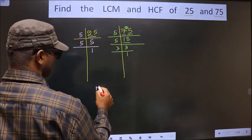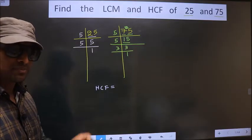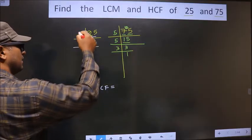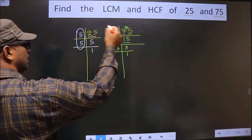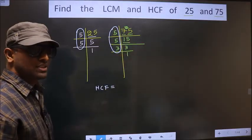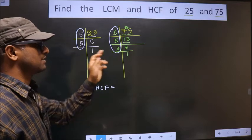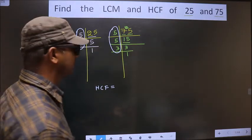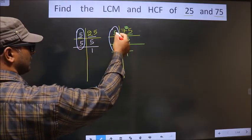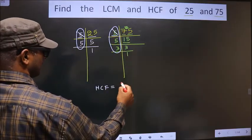So now our HCF is the product of numbers that are present here and also here. We should find the numbers that are present in these two places. So let us find. Starting with the number 5. Do we have 5 here? Yes. So you cut 5 right here.